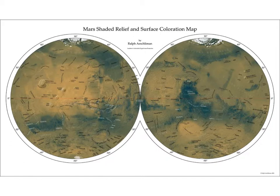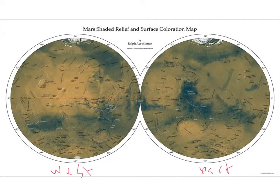Here's a different projection. In this case we've chopped the globe in half and squished each half into a circular form, which distorts the globe in different ways. But again, this is still shaded relief and surface color. Here's the Western Hemisphere and here's the Eastern Hemisphere. The Tharsis region is here in the Western Hemisphere with those three volcanoes. Olympus Mons is there. Valles Marineris. Hellas is over here in the Eastern Basin.